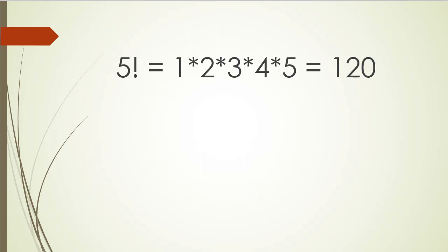One of the options to compute the factorial is obviously a loop. We could simply loop 5 times, and within the body of the loop we could perform all the calculations.